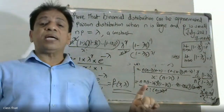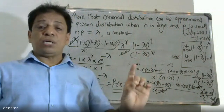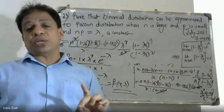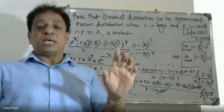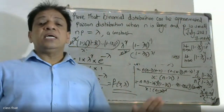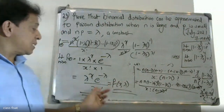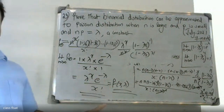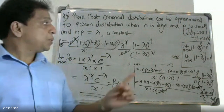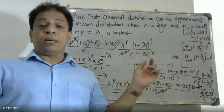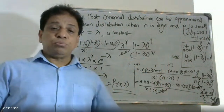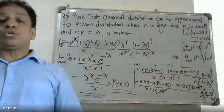n factorial equals n into n minus 1, n minus 2, etcetera, n minus x minus 1. The n minus x factorial cancels, giving us the final result: lambda raise to x times e raise to minus lambda divided by x factorial. This completes the proof of the approximation of the binomial distribution to the Poisson distribution.